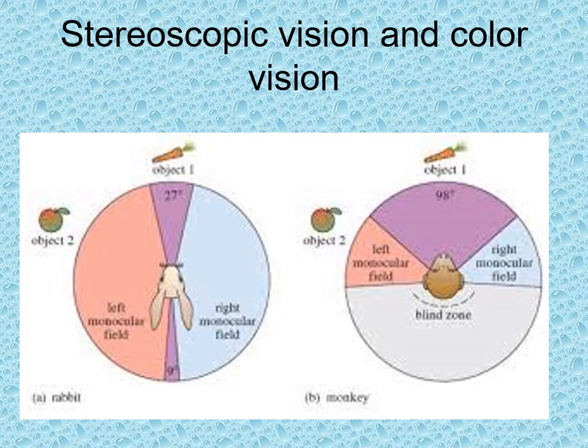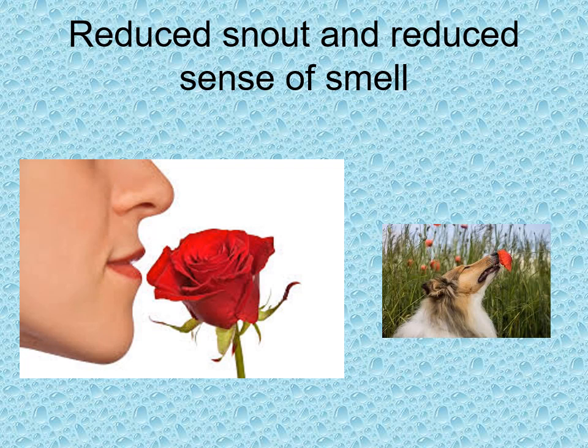We see great color, as do most of the apes. We also have a reduced snout and reduced sense of smell. A dog has a very good sense of smell, and a large portion of their brain is dedicated to that sense of smell. We have small noses; they get in the way of our eyesight, and our eyesight is important for primates. Very little of our brain is dedicated to our sense of smell.